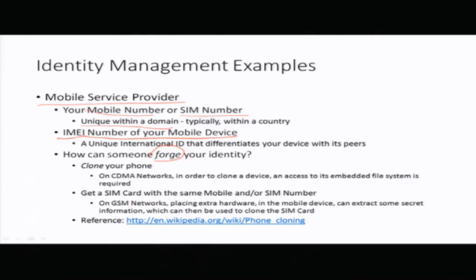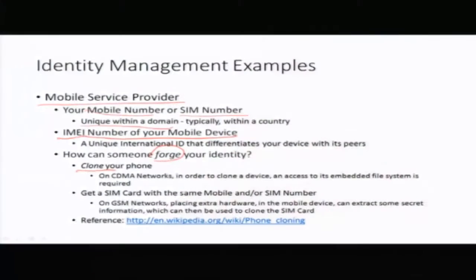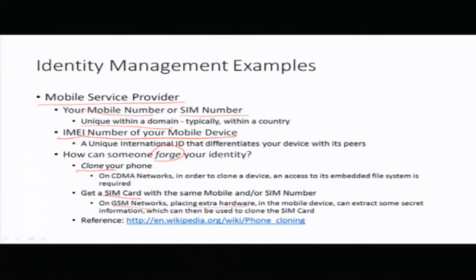Now, how can somebody forge your identity on a mobile services system? One way is to clone your phone — on CDMA networks, cloning a device requires access to its embedded file system, meaning anyone who wants to hack your phone would need access to its internals, which is not easy. Another way is to obtain a SIM card with the same mobile or SIM card number. On GSM networks, placing extra hardware in the mobile device can accomplish this. You can look at the Wikipedia reference for more details on how this hacking can be done.